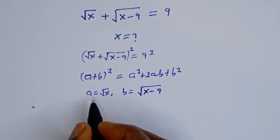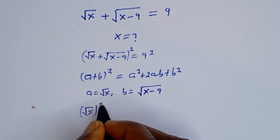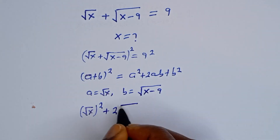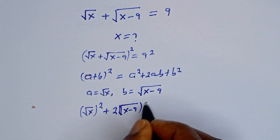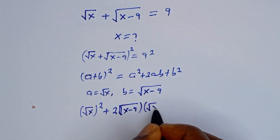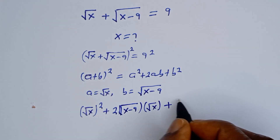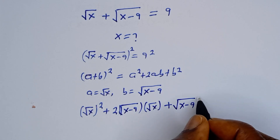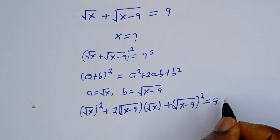Now let's substitute. We have square root of s squared plus 2 times square root of s minus 9 times square root of s, plus square root of s minus 9 all squared, is equal to 9 squared.